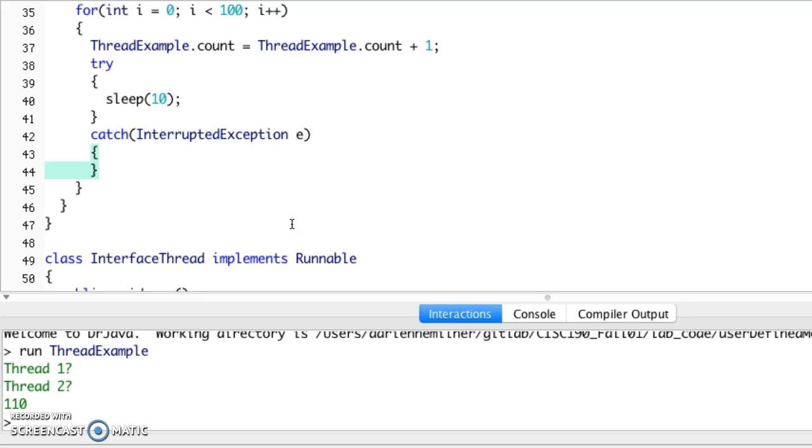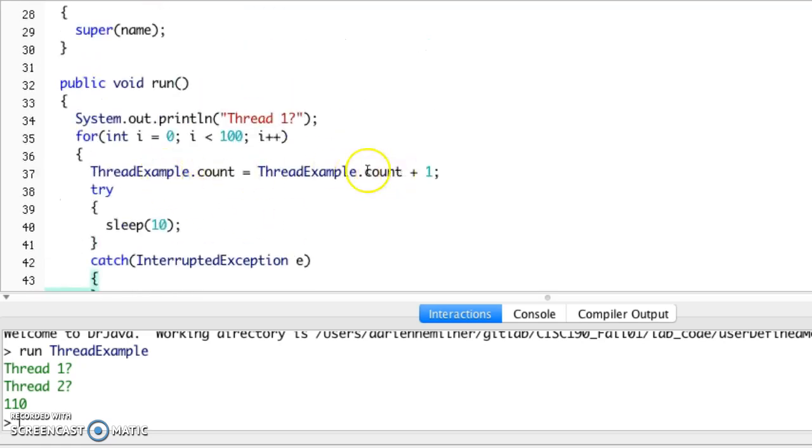Even though this instruction here, thread.count equals thread.count plus one, to us that looks like there's no way that couldn't happen. Why could that not happen? The problem is we're looking at a higher level language, and when you start breaking down the code into the assembly or into the Java virtual machine instructions, this is going to get broken into lots and lots of instructions. Actually it's quite a lot when you actually look at it at the assembly level.